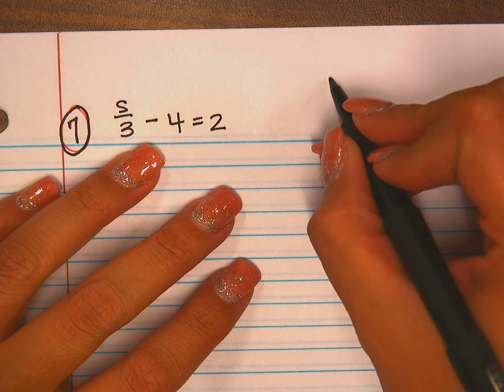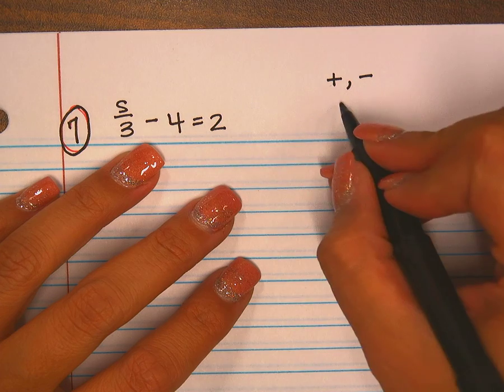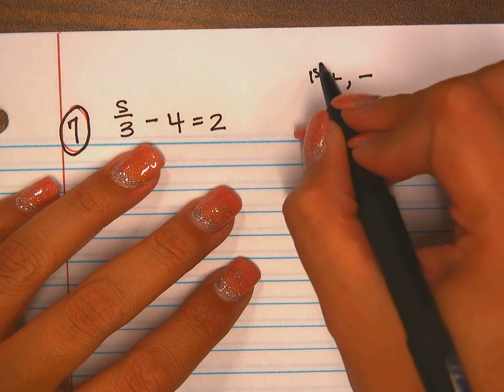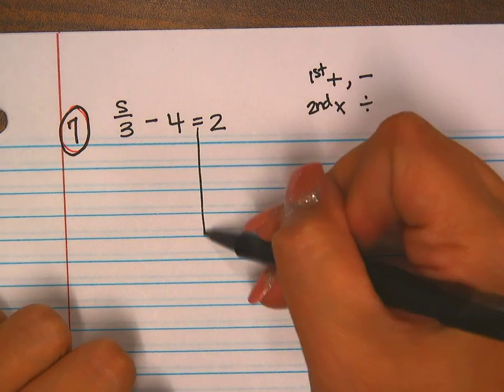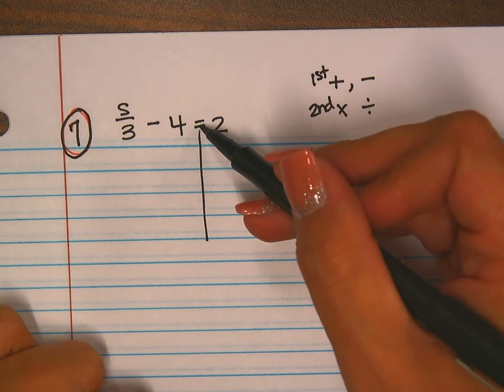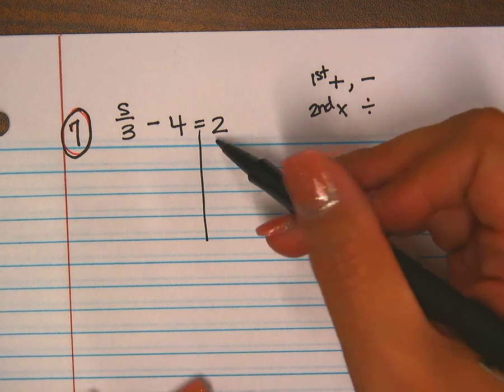We need to add or subtract first, then we're going to multiply or divide. This is first, this is second. So I draw my line down the middle, dividing my left side and my right side of my equation.